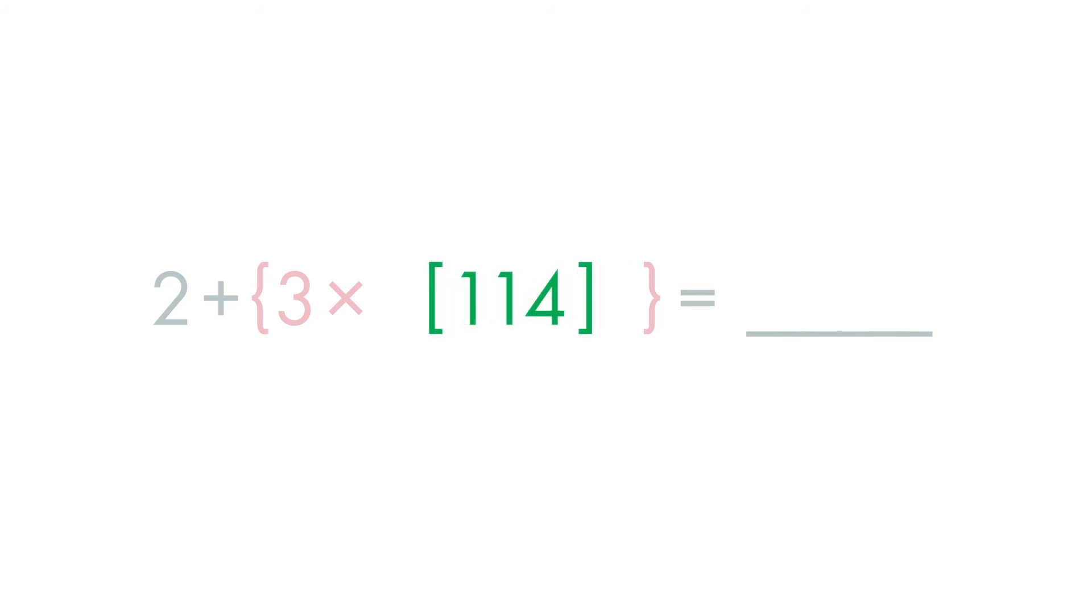which is equal to 114. And inside the braces, we multiply 3 times 114. That is equal to 342. 2 plus 342 is equal to 344.